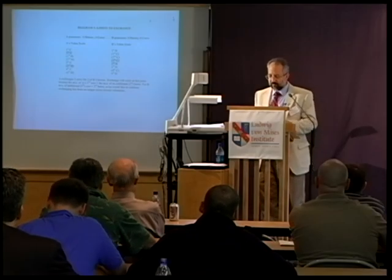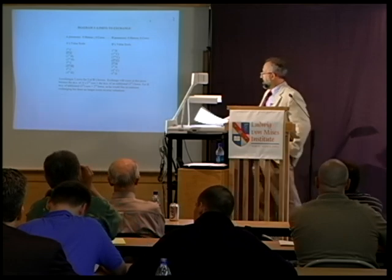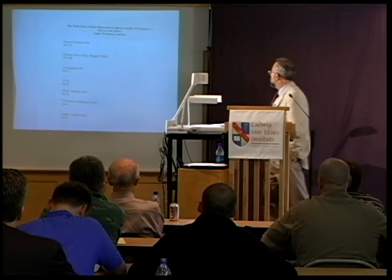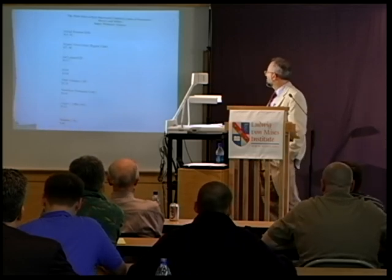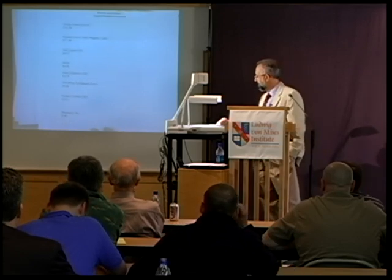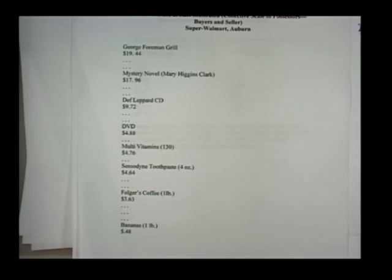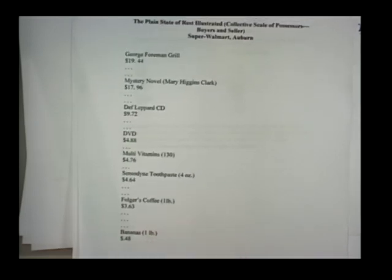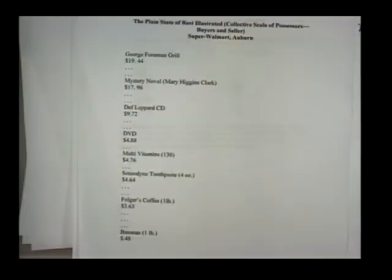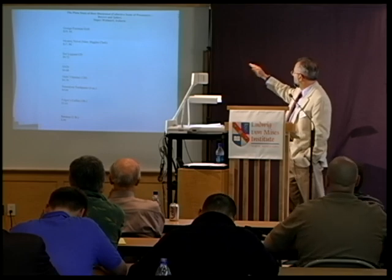So let me give you a more up-to-date example. This is a representation of what I bought at Walmart last year. Notice that when I went to Walmart, I had a stock of money and didn't have enough of these other things compared to money. So I bought a George Foreman grill at Walmart because I valued it above the price of $19.44. I bought three DVDs because I valued them more than $4.88, and only four ounces of Sensodyne toothpaste because I didn't value any more than that above the per unit price.